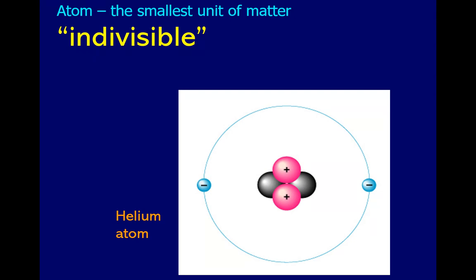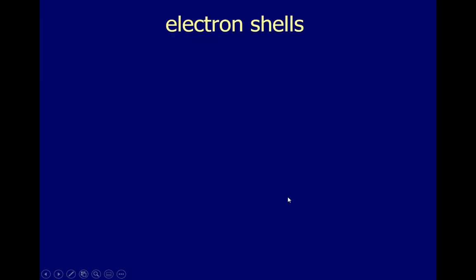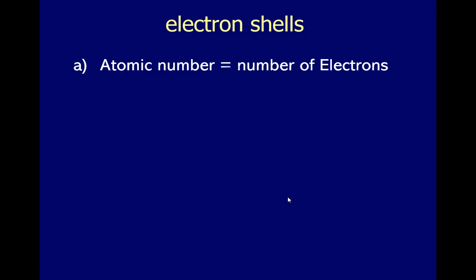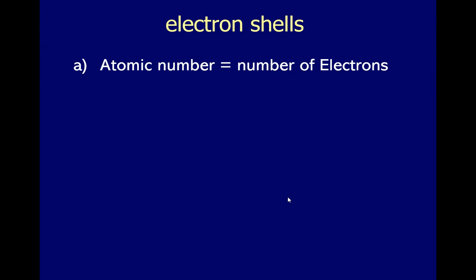We have here a helium atom, which is composed of electrons, protons, and neutrons. Now, in understanding the term electron shells, we need to first understand the fundamental terminologies.